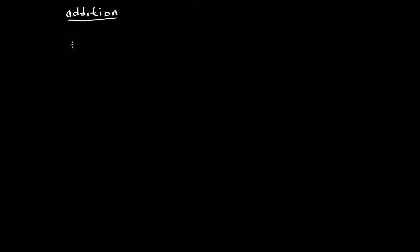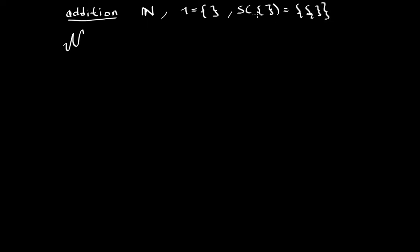Just to jog your memory, last time I told you that we can define addition in the following way. If you are working in some sort of natural set — and it doesn't have to be the natural set that you're used to, denoted by the double-line N — you could be working with some different natural set. We talked about how Russell defined one to be the empty set and the successor of one to be the set of the empty set, and so on. You don't necessarily have to be working in the naturals you are used to; you could be working in any given natural set that you can prove with the axioms provided by Peano.